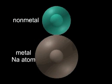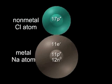The sodium atom has 11 protons and 12 neutrons in its nucleus and 11 electrons around the nucleus. The chlorine atom has 17 protons and 18 neutrons in its nucleus and 17 electrons surround it.